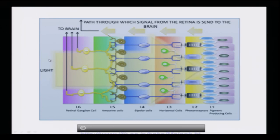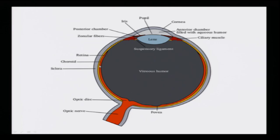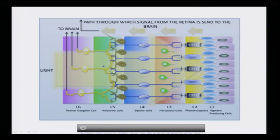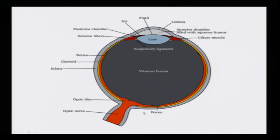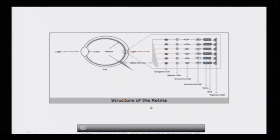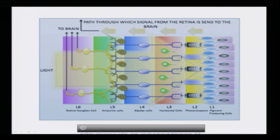Light falls from the front side. The first layer encountered is the retinal ganglion cell layer, but neither this layer nor layers L6, L5, L4, or L3 have any photoreceptors or light-sensing proteins. The light is sensed only by the photoreceptor layer, and beyond that is an opaque pigment epithelial cell layer at the back of the eye which provides a cushioning effect.